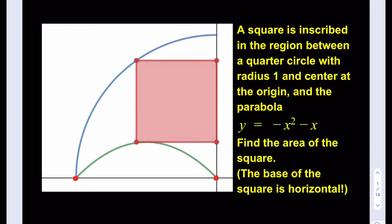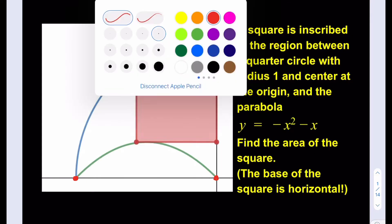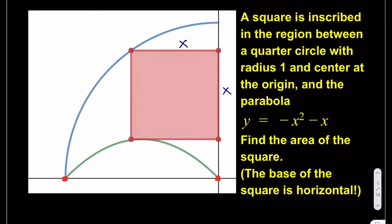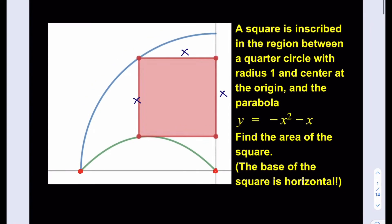So we're going to be making some connections here — that's how we solve these problems. This problem could be considered an easier geometry puzzle because we're not making that many connections. First, let's go ahead and assume that the side length of the square is x. So each side is going to be x.